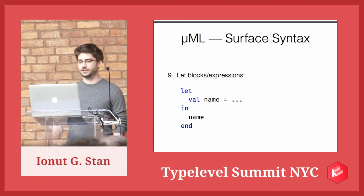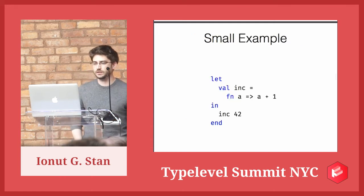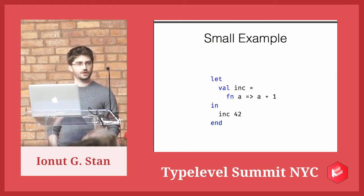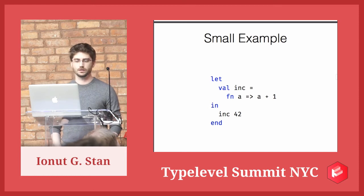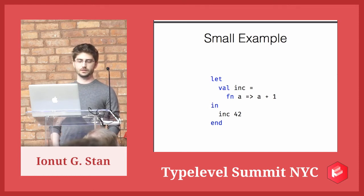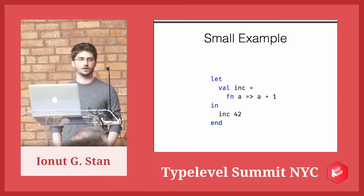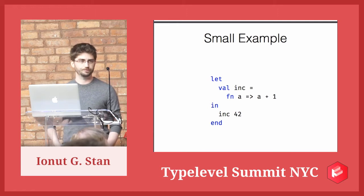This is a small example. We're declaring a variable called 'inc' and assigning an anonymous function to it, which takes a single param and we just increment that param. Inside the body of the let expression, we just call inc as a function with the argument 42. Result: 43.